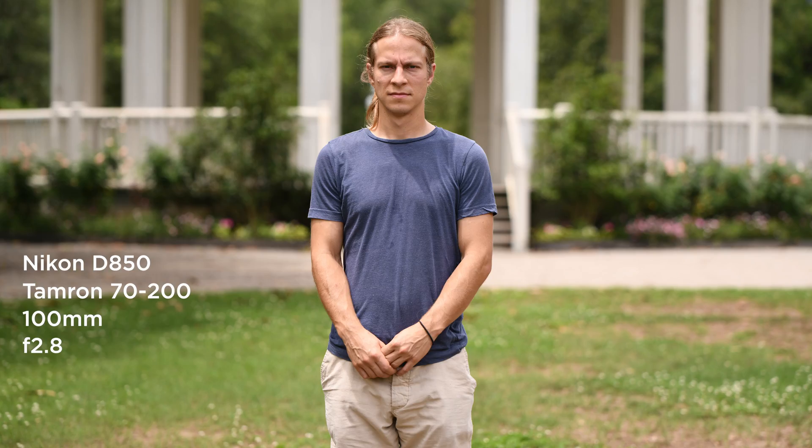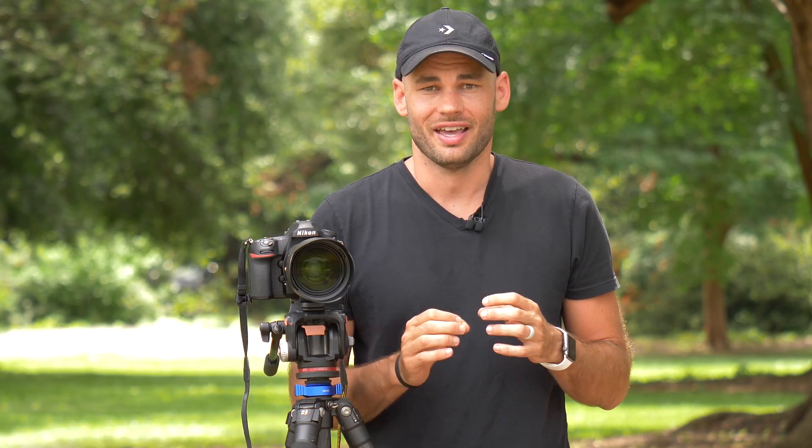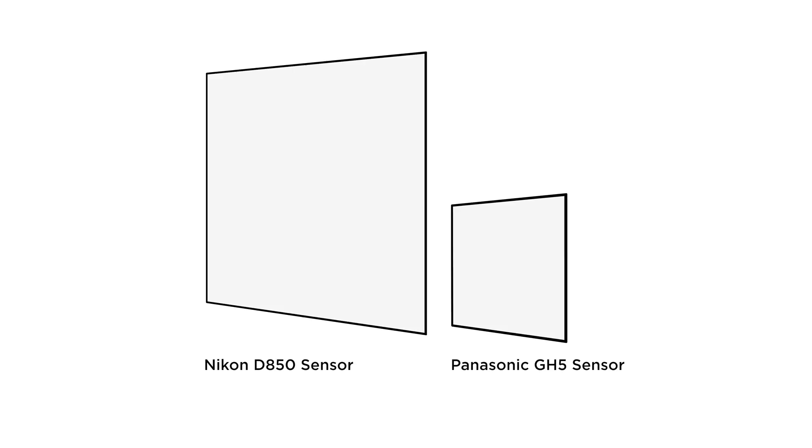So now let's go back to the very first question: does a larger sensor produce shallower depth of field? Let's do one more test. For this shot, I'm going to be taking an image of David at 100 millimeters at f2.8. You can see here I'm shooting on my full frame Nikon D850. Now I'm going to take off that camera, leave the lens in the exact same place, and take the exact same shot with my GH5, which is a micro four-thirds sensor. As you can see, we have very different fields of view with both of these cameras, but if we zoom in with the Nikon D850 shot to create the same field of view, the depth of field will look the exact same.